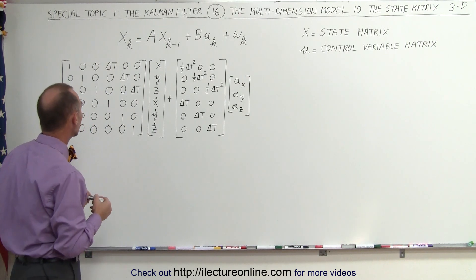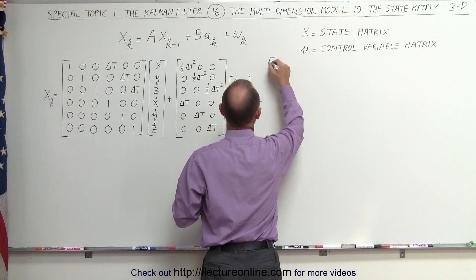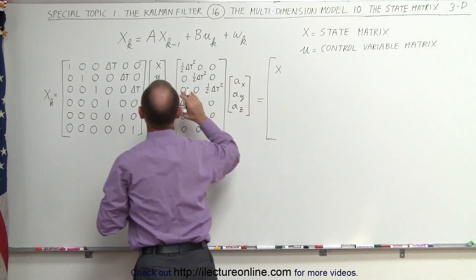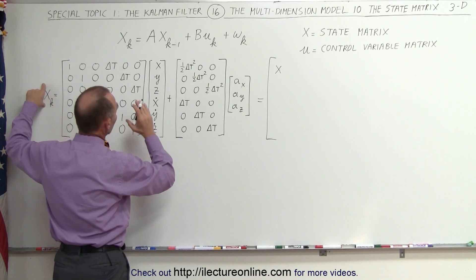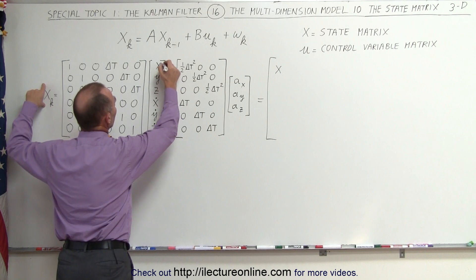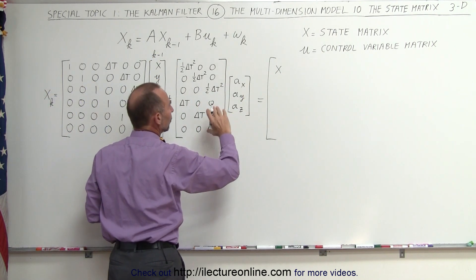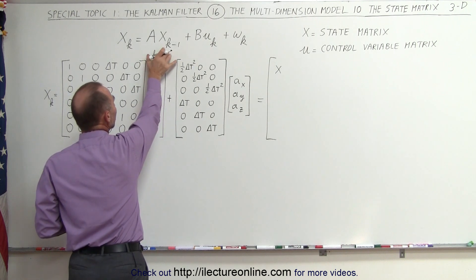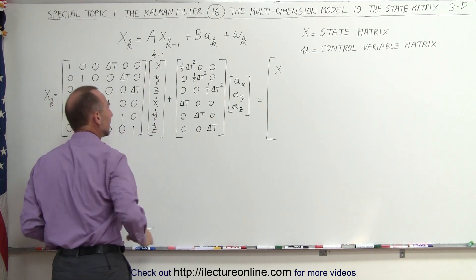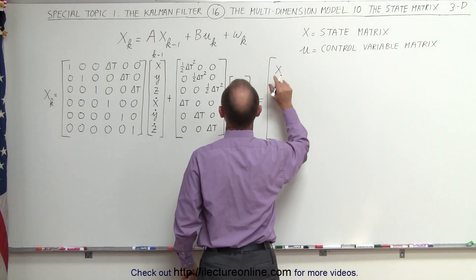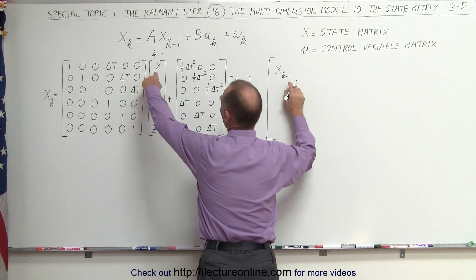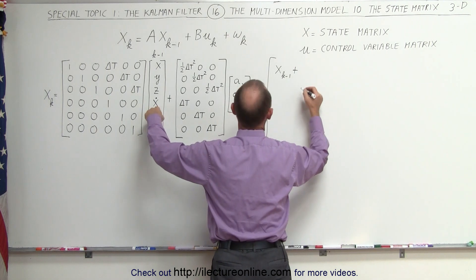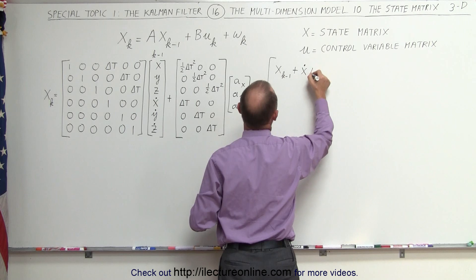Let's go ahead and do the multiplication and see what we get. From the first multiplication, we end up with an x position. This would be the current state matrix and this is the previous state matrix, the k minus 1 case. The acceleration we assume doesn't change, but this is the position and velocities in the three dimensions from the previous state, a delta t ago. So we get the previous state x at k minus 1, multiplied times 1, and then we add to that the velocity in the x direction times delta t.